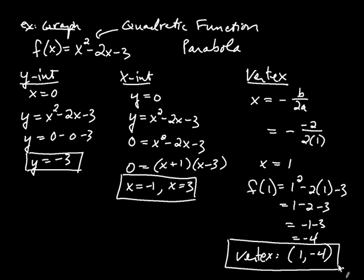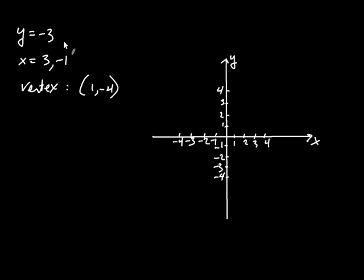So we have the vertex, two x-intercepts, and the y-intercept. Let's graph the parabola using that information. The y-intercept is -3, the x-intercepts are -1 and 3, and the vertex is at (1, -4) — way down here. This parabola opens up, so let's draw a curve through these points.